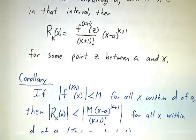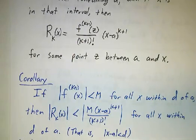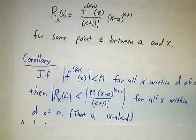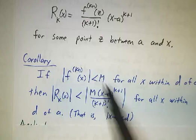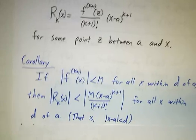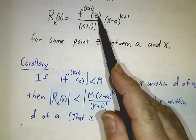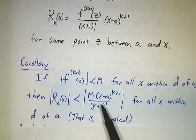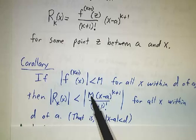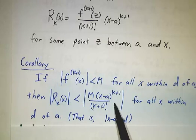Now, that means that if you know that the derivative isn't too big, if you know that the k plus first derivative is always less than some number, let's call it m, then even if you have no idea where this point z is, you know that f(k+1) of z has got to be m or less, and so the remainder term has to be given by this expression or less.